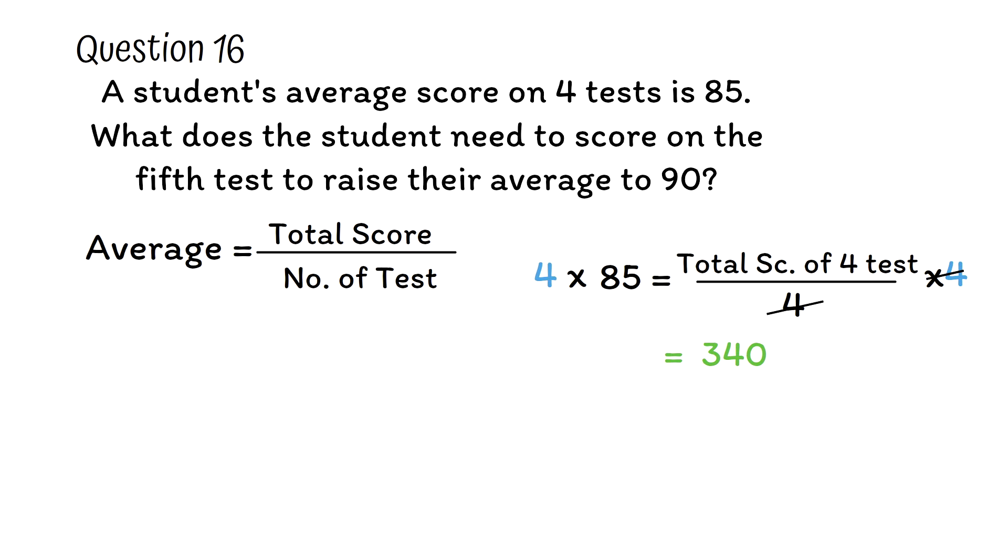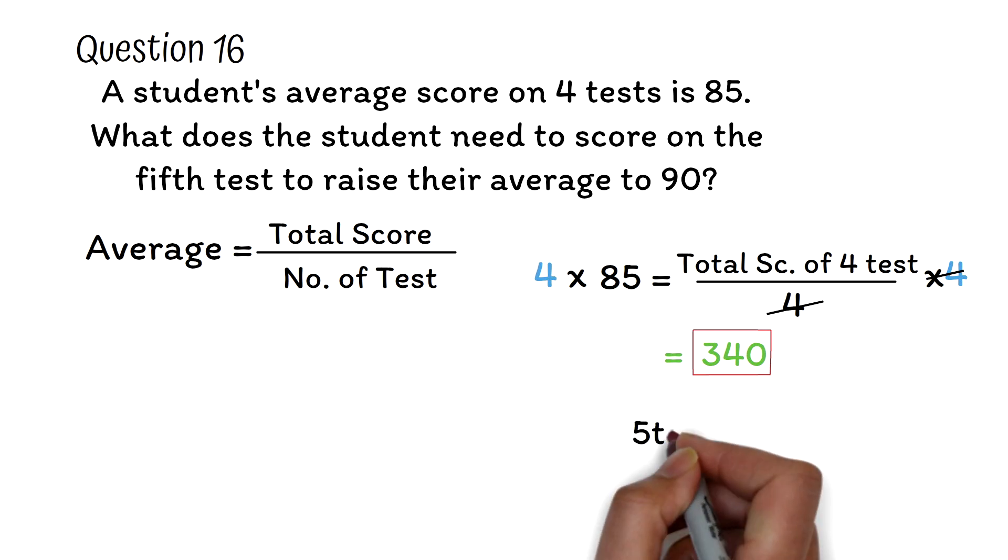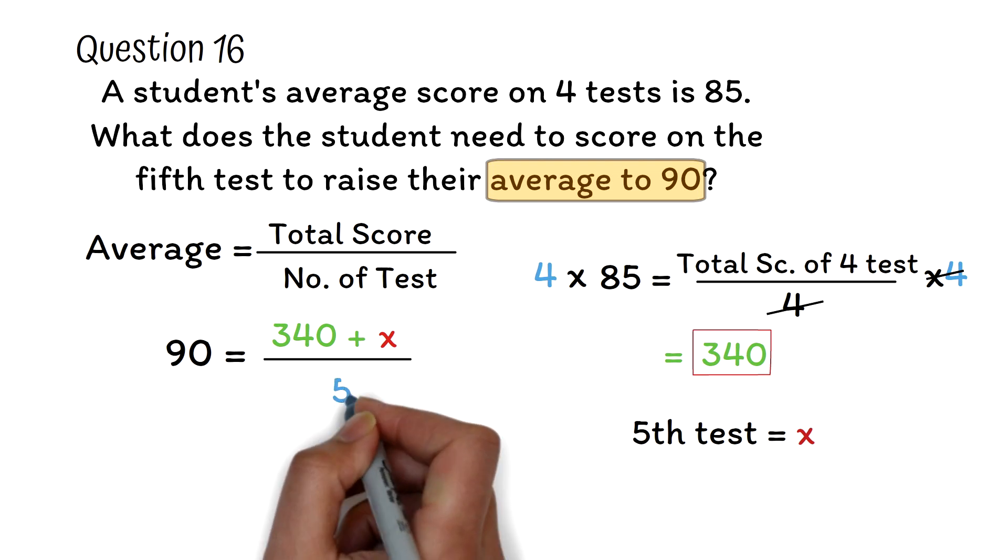Average of the five tests is total scores of all five tests divided by the number of tests taken. We know the total for four of the tests, which is 340. Let's represent the score for the fifth test by x. So the average of the tests, which has been given as 90, will be equal to the sum of the four tests, which is 340, plus the fifth test, which is x, divided by the number of tests taken, which we know is 5.